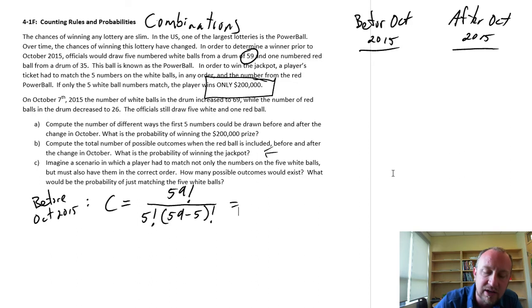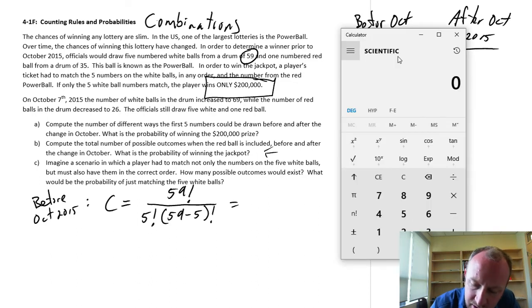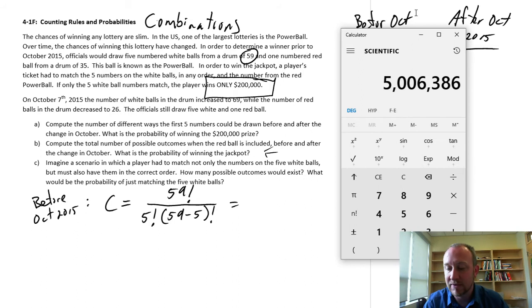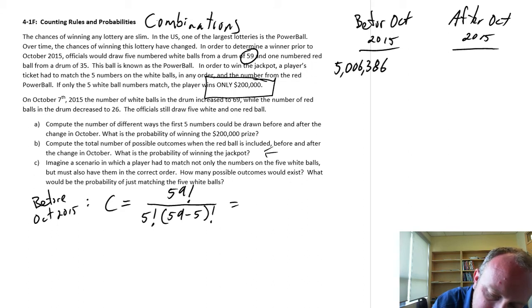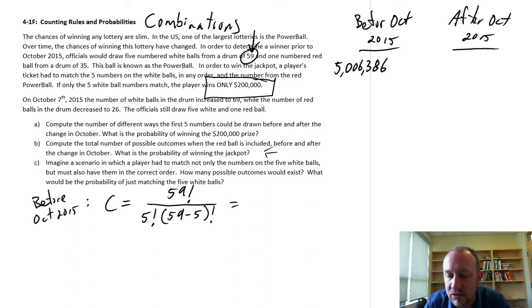So then if we enter this into our calculator, I'm going to have 59 factorial divided by 5 factorial times 54 factorial, and so I have 5,006,386. So that's how many different ways the five white balls can be drawn, how many combinations of five balls are there from 59.